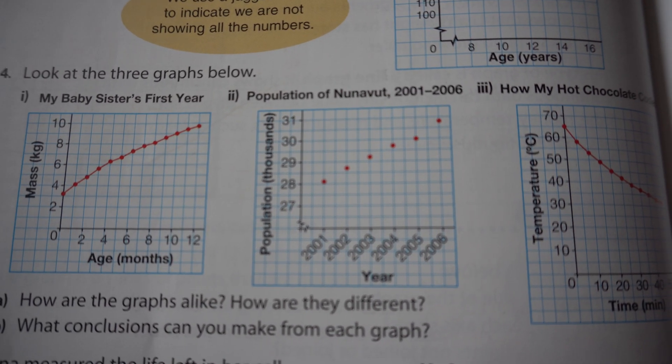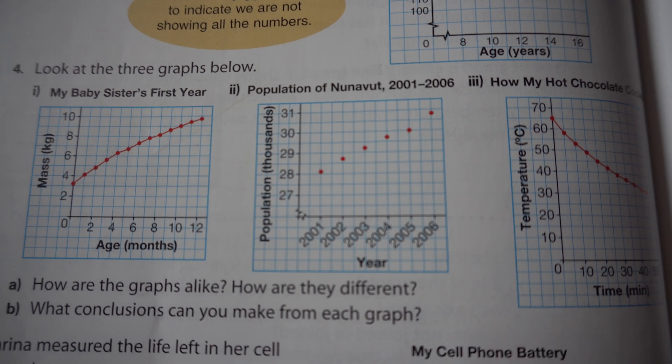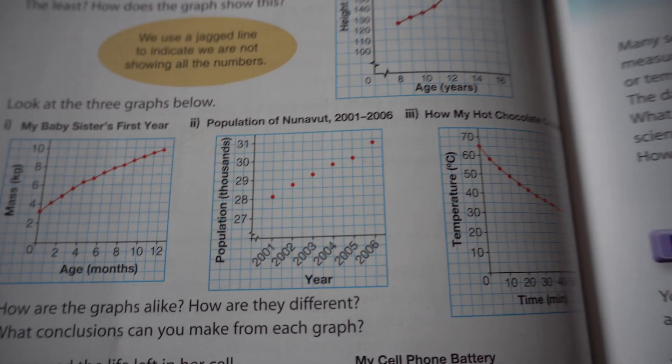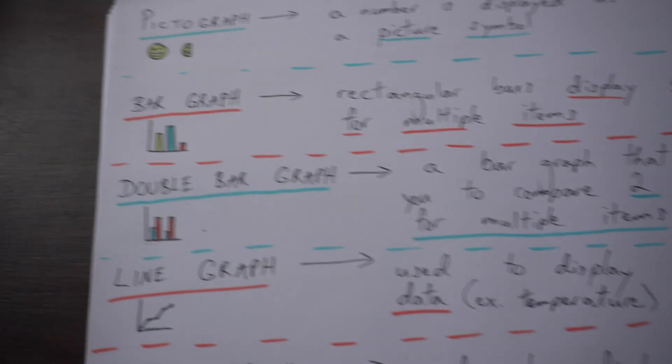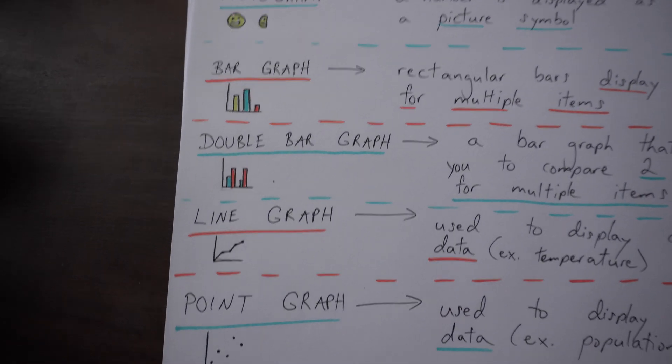And you'll see that the points aren't joined because each year when they did that census, they would start counting at zero. There you have it. Those are your graphs. So for this assignment you're going to have to decide which graph will be the best to choose.